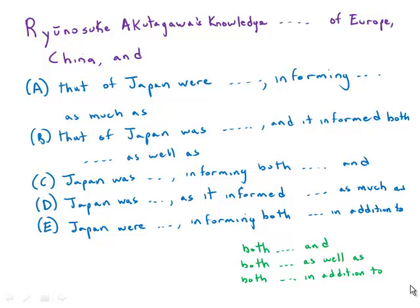The literatures of Europe, China, and Japan — that would be a correct, uninterrupted parallel structure. Whereas if we say the literatures of Europe, China, and that of Japan, that interrupts the parallel structure. In other contexts it would be correct, but 'that of' in this context is incorrect — it interrupts the parallel structure.